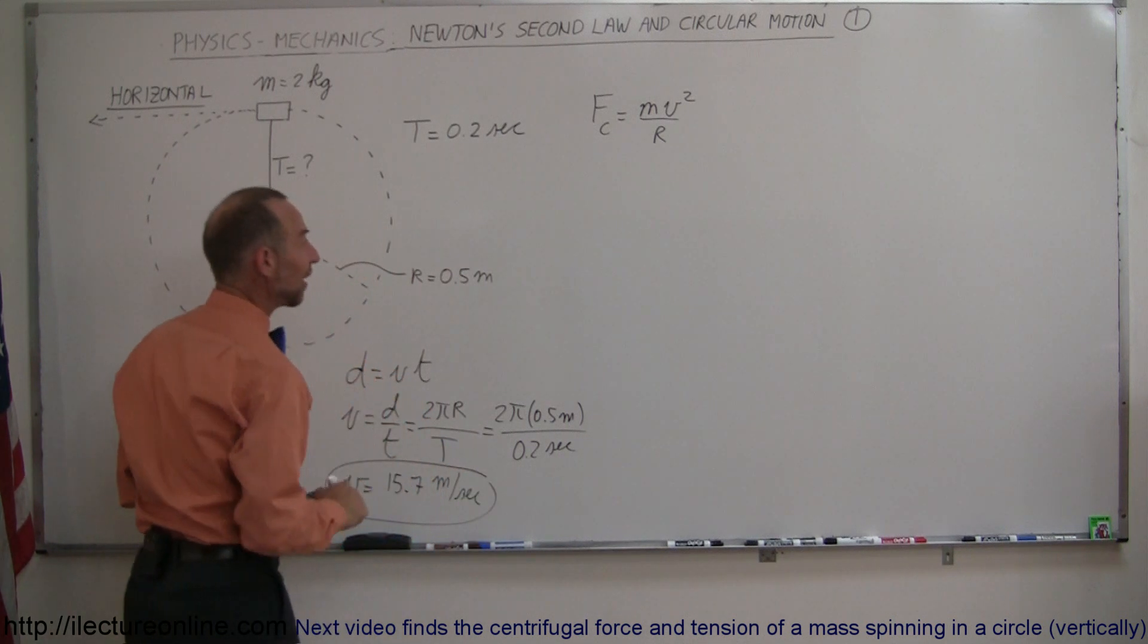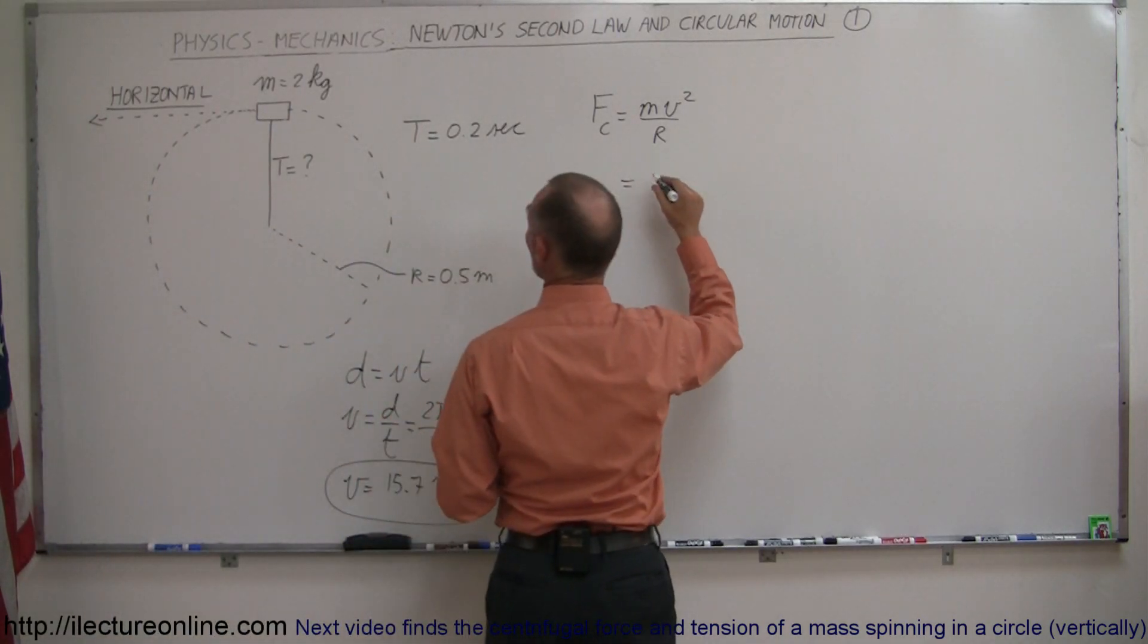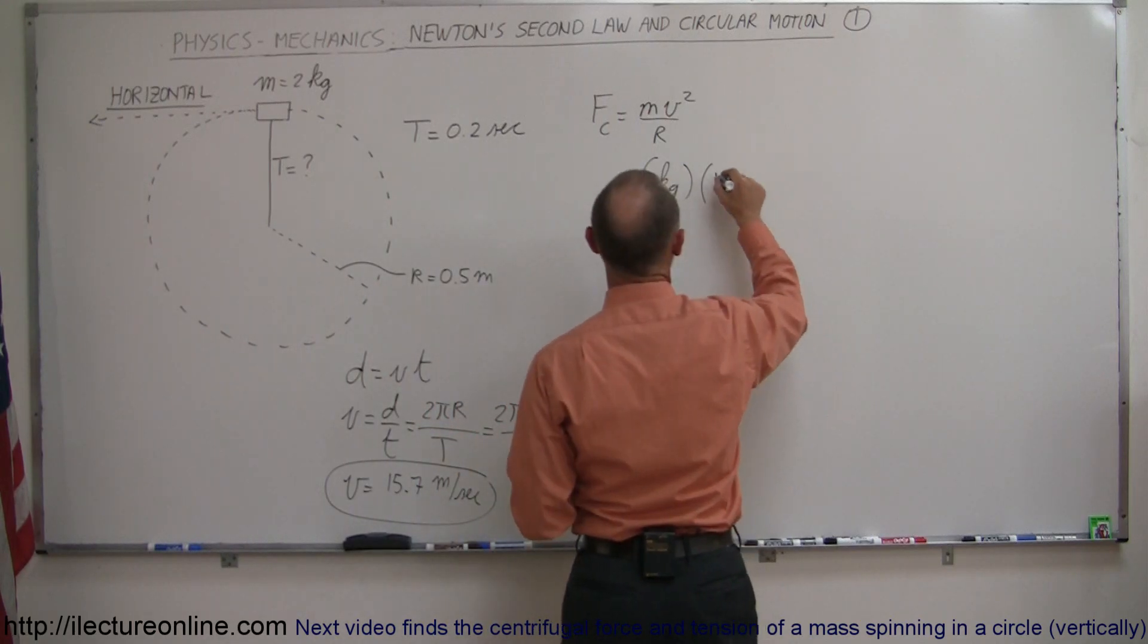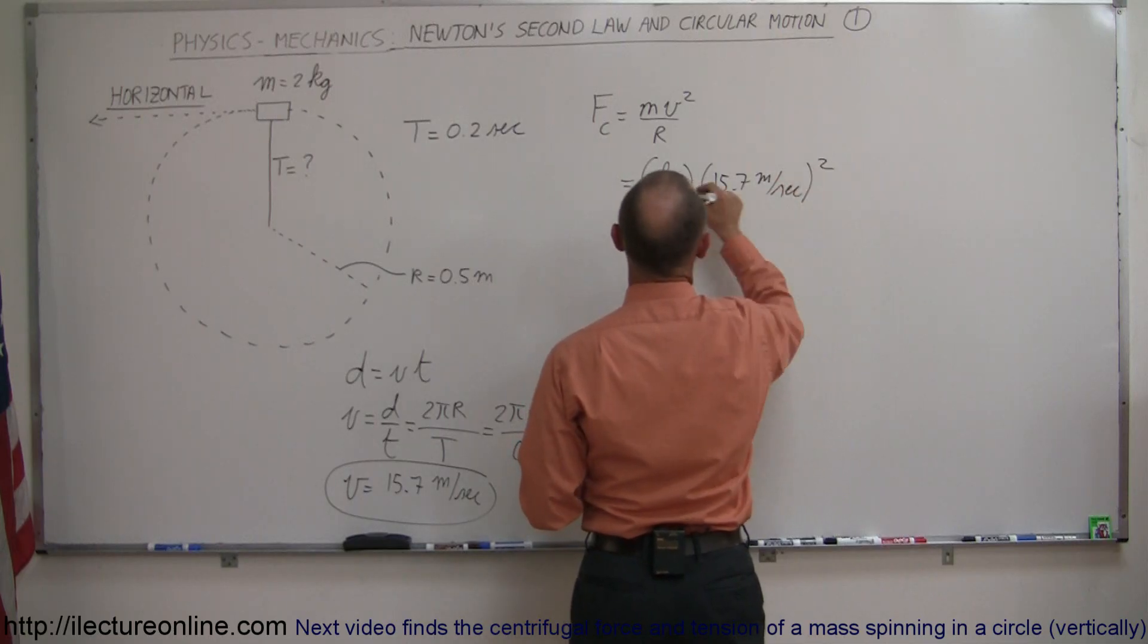All right, now that we know how fast it moves, we can plug that in there. And so this is equal to 2 kilograms times the velocity of 15.7 meters per second, quantity squared, divided by the radius of 0.5 meters.